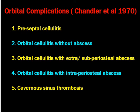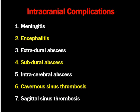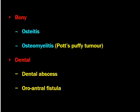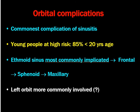The orbital complications are: first, preseptal cellulitis; second, orbital cellulitis without abscess; third, orbital cellulitis with extaperiosteal or subperiosteal abscess; fourth, orbital cellulitis with intraperiosteal abscess; and fifth, cavernous sinus thrombosis. Intracranial complications can be classified into meningitis, encephalitis, extradural abscess, subdural abscess, intracerebral abscess, cavernous sinus thrombosis, and sagittal sinus thrombosis. Bony complications include osteitis, osteomyelitis, and Pott's puffy tumor. Dental complications include dental abscess and oroantral fistula.